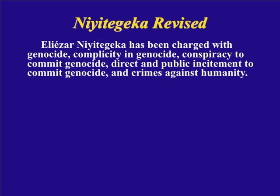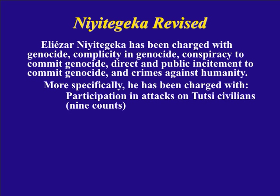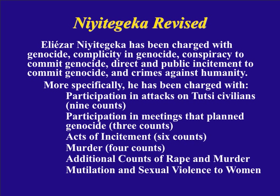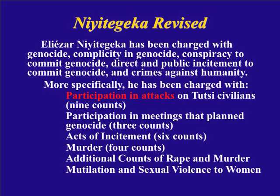I suggested to that tribunal that it consider writing its judgments beginning something like this: Eliezer Vietagica has been charged with genocide, complicity in genocide, conspiracy to commit genocide, direct and public incitement to commit genocide, and crimes against humanity. More specifically, he has been charged with participation in attacks on Tutsi civilians, participation in meetings that planned genocide, acts of incitement, murder, additional counts of rape and murder, mutilation, and sexual violence to women. This beginning does what I think the beginning of every judgment and pleading should do — it indicates who did what to whom before anyone set foot in court, and furthermore, it foreshadows the structure of the judgment to follow.